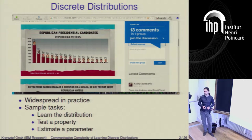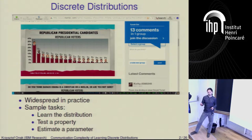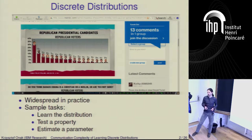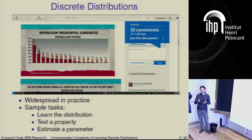Another example is you might want to check if this distribution has some specific property. Perhaps the simplest example is testing if a distribution is uniform — the support size is small, you get each element from the support of some distribution, and you want to see if this is roughly a uniform distribution. Another example is maybe you want to estimate some parameter of the distribution, like the entropy, or if it's a distribution on some product set, whether it is a product of distributions or how far it is from being a product distribution.